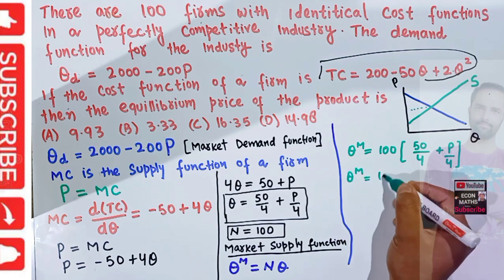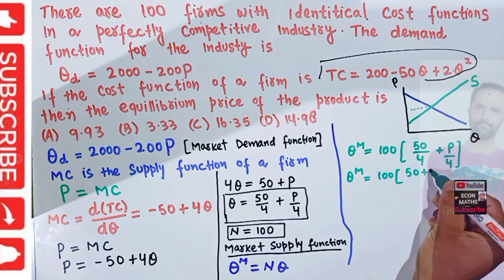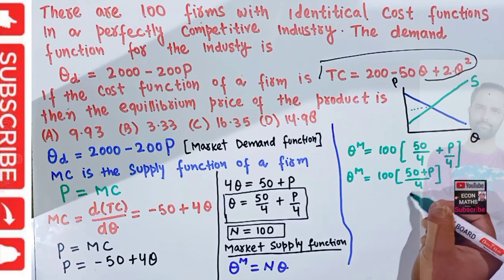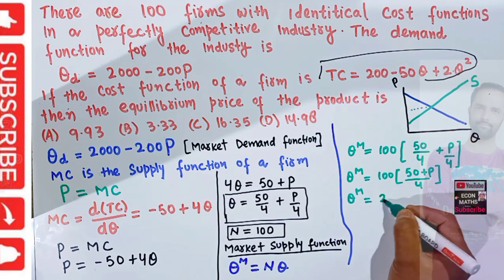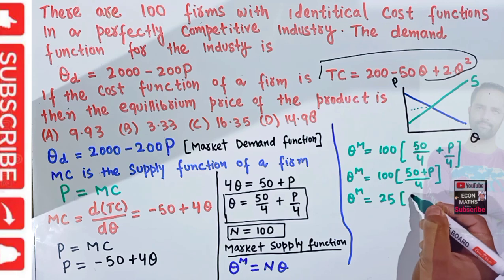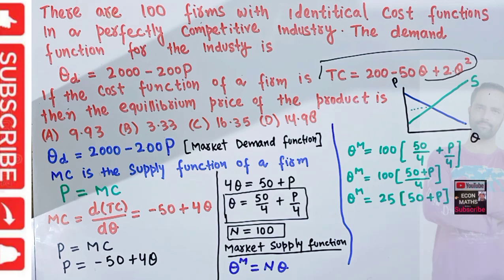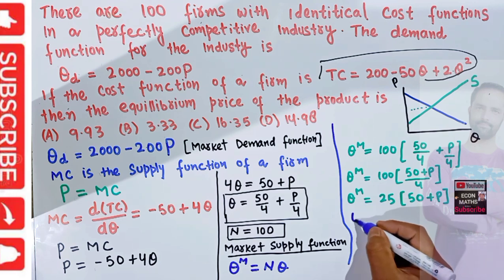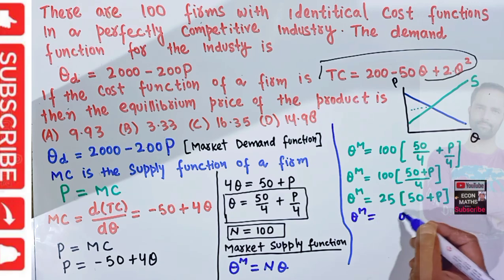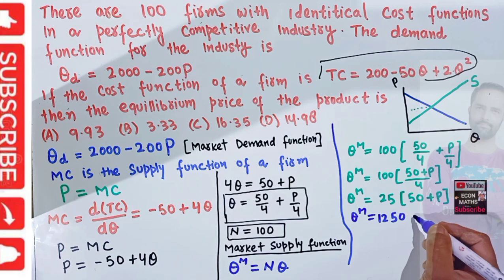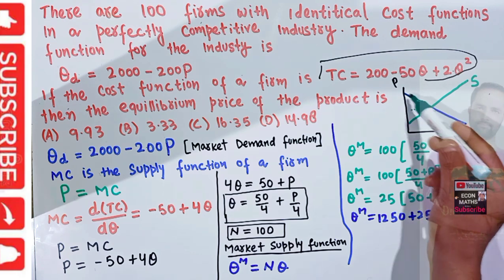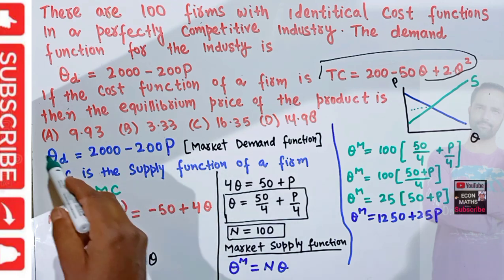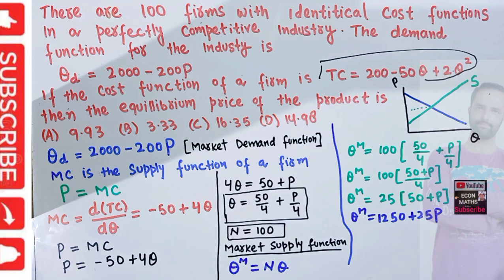So the market supply function is: QM = 100 × (50 + P)/4 = 25 × (50 + P) = 1250 + 25P. This is our market supply function. Now, at equilibrium, market demand equals market supply: QD = QS.